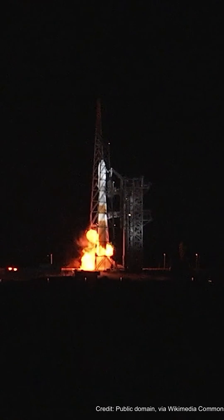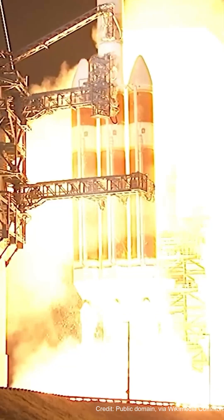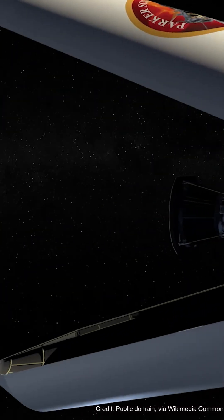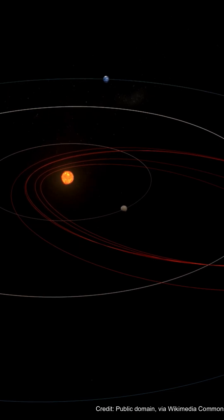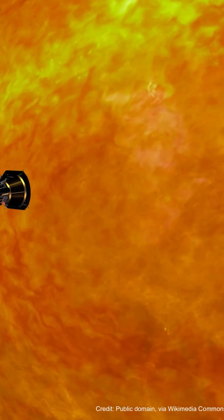On December 24, 2024, at 11:53 Universal Time Coordinated, the Parker Solar Probe made its closest approach to the sun, reaching just 3.8 million miles from the sun's surface.